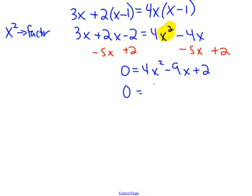Now I factor it. This plus sign tells me the signs are going to be the same. They're both going to be minus. The only way to get 2 is 2 and 1. For 4, I can use 1 and 4 or 2 and 2. 4 and 1 works.